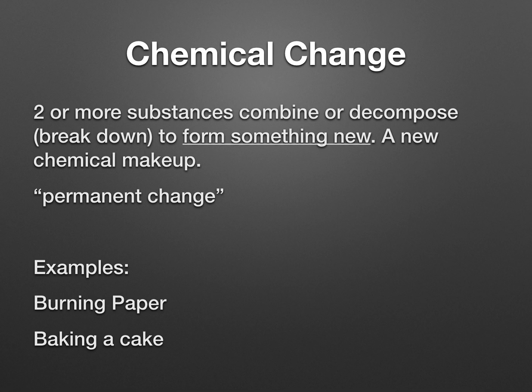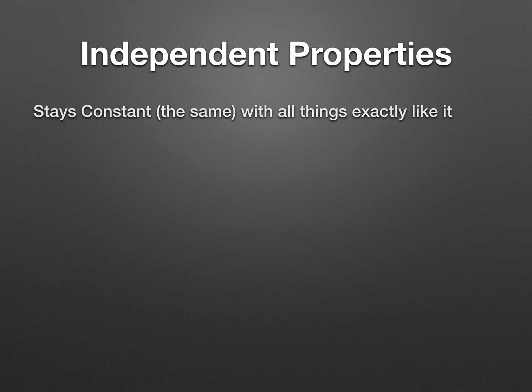Finally, we're going to talk about two different types of properties. The first is called independent properties, and the second is dependent. This is a big focus of this unit. Independent stays constant, and constant means the same with all things exactly like it, meaning anything that's the same type of matter will always have the same independent properties. If it's a different type of matter, its independent properties can be different.